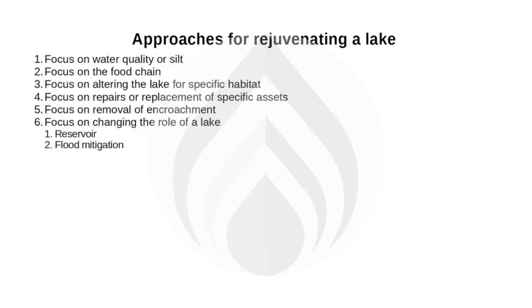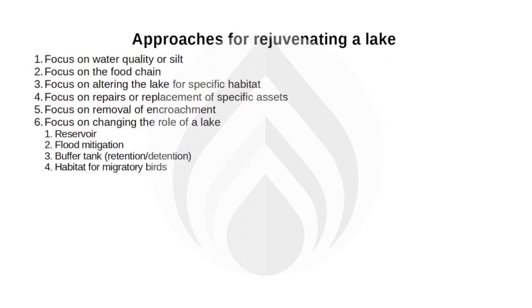The second role is flood mitigation — such a lake is emptied before heavy rains arrive and absorbs flood waters. Third, as a buffer tank where fluctuation in flow is absorbed by holding water for some time. Fourth, as a habitat for migratory or local birds, involving setting up vegetation for food and nesting.